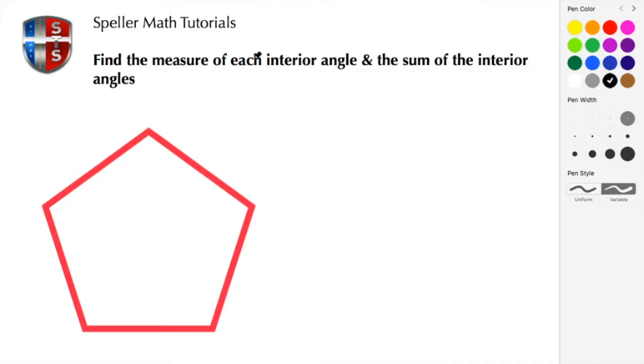We need to find the measure of each interior angle and the sum of the interior angles. Like I said, here we have a regular polygon. In this case it's a pentagon, and being regular that means each one of these sides are the same length or congruent.